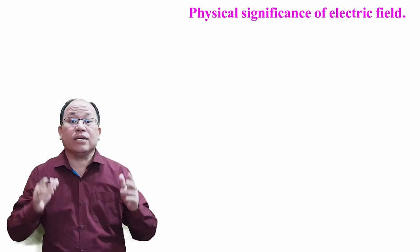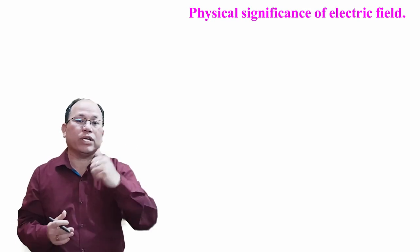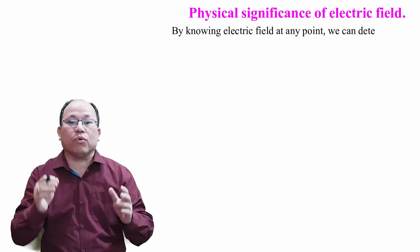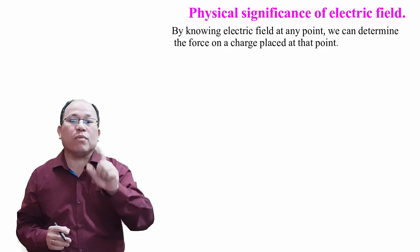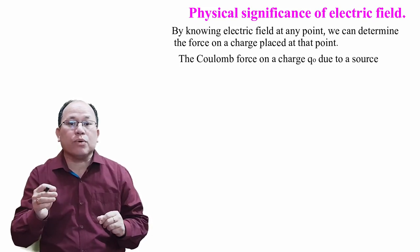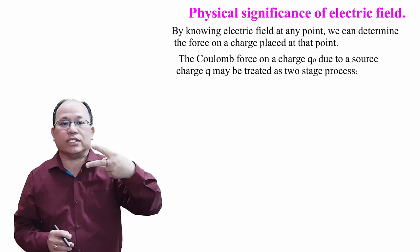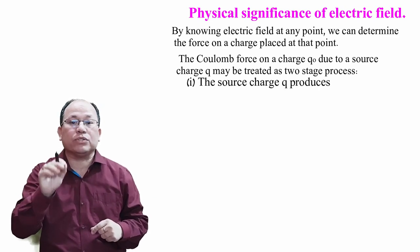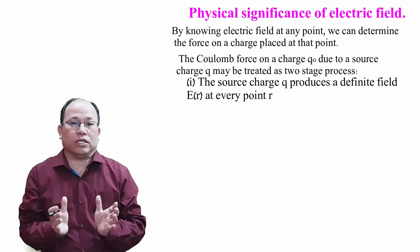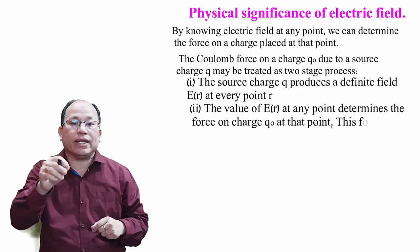Let us come to the next topic: physical significance of electric field. By knowing the electric field at any point, we can determine the force on a charge placed at that point. The Coulomb force on a charge may be treated as a two-stage process. First: the source charge Q produces a field E at every point, meaning the electric field creates a particular region around the source. Second: the value of E at any point determines the force on charge q₀ at that point.